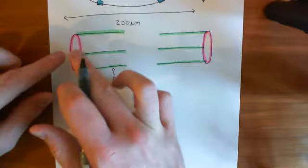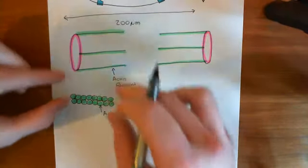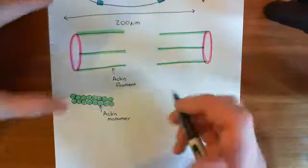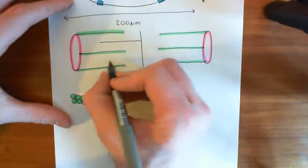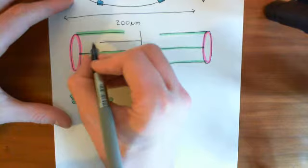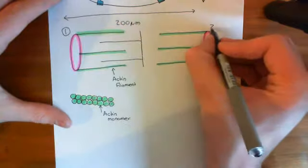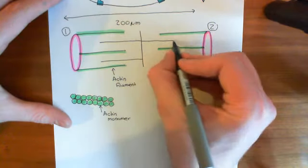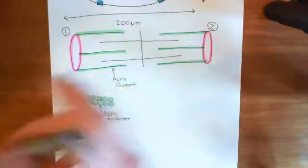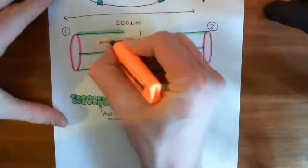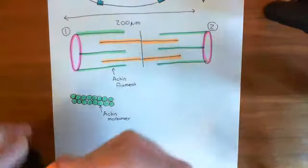These dense bodies have actin filaments — polymers of actin monomers — attached to them, spreading out towards one another. Then in the middle you have a disc of protein which also has filaments spreading out from it: some overlapping with the actin filaments from dense body 1, and myosin filaments going in the opposite direction overlapping with the actin filaments of dense body 2.